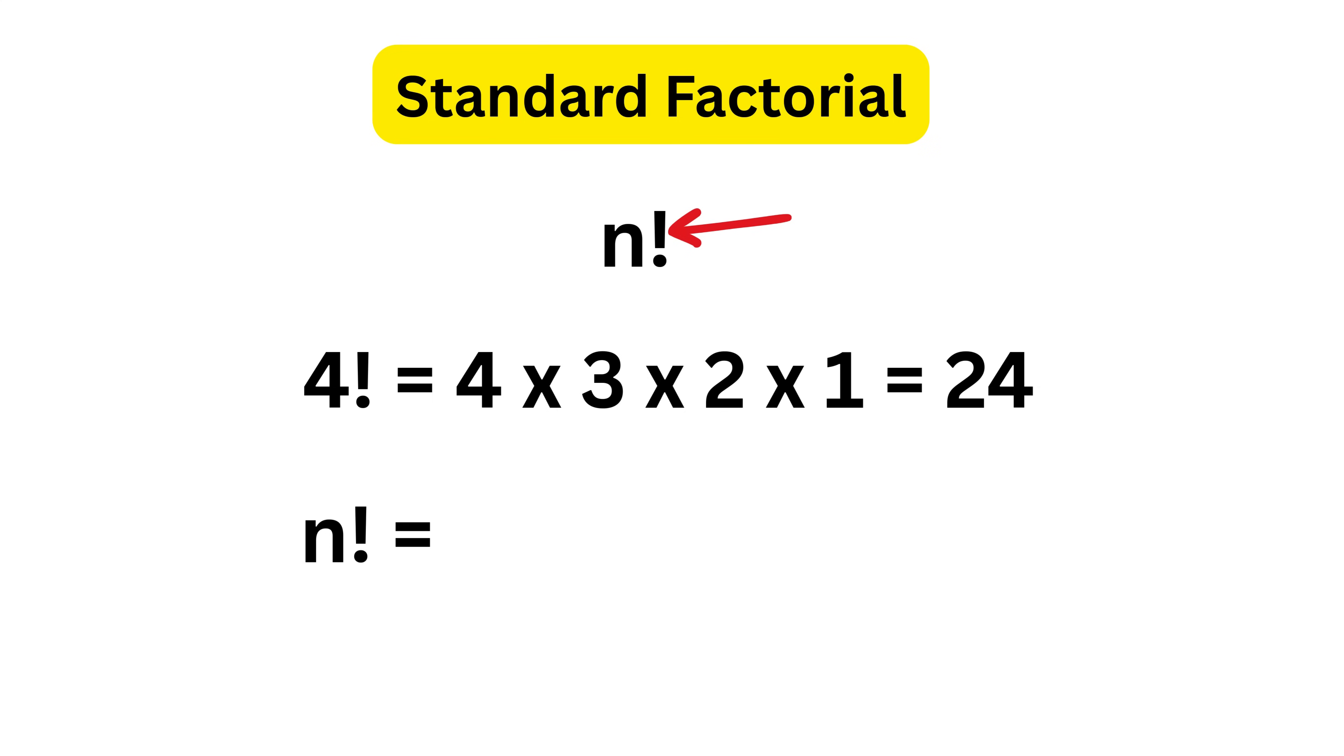And any n factorial equals n times n minus 1, and so on, times 2 times 1. But do you know that we have other types of factorials as well? And today we will explore almost all of them.